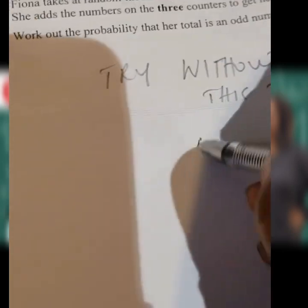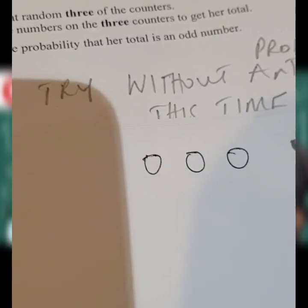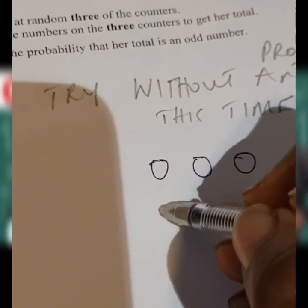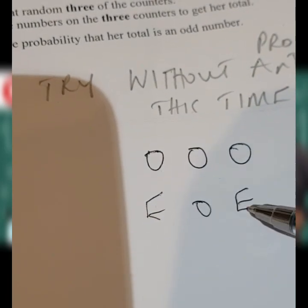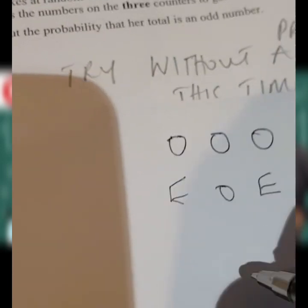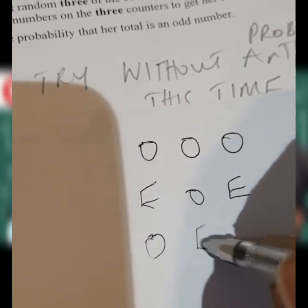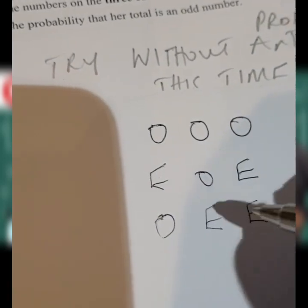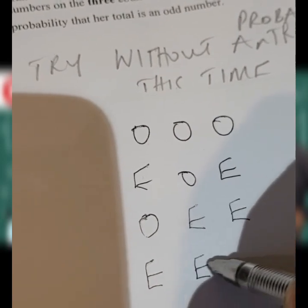The combinations to get an odd total are: odd, odd, odd — for example, 1 plus 1 plus 5 gives 7, which is odd. Another way is even, odd, even — like 2 plus 1 plus 2 gives 5, which is odd. Another way is odd, even, even. And we could also have even, even, odd.